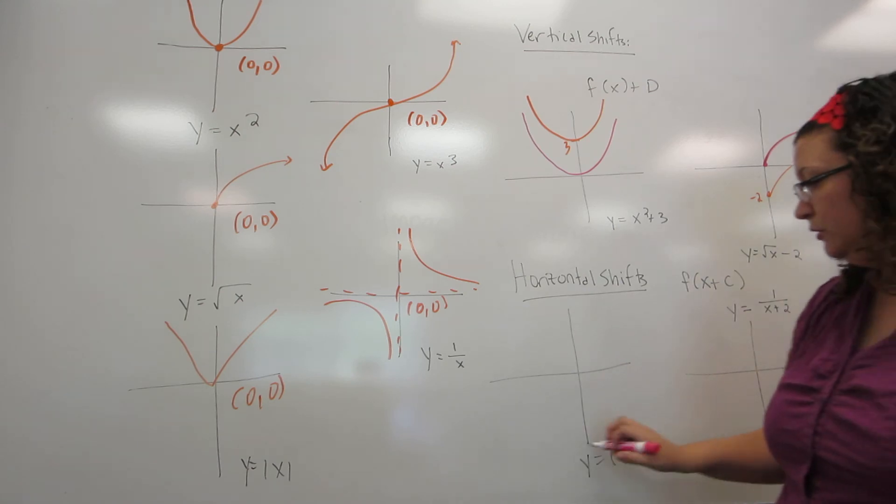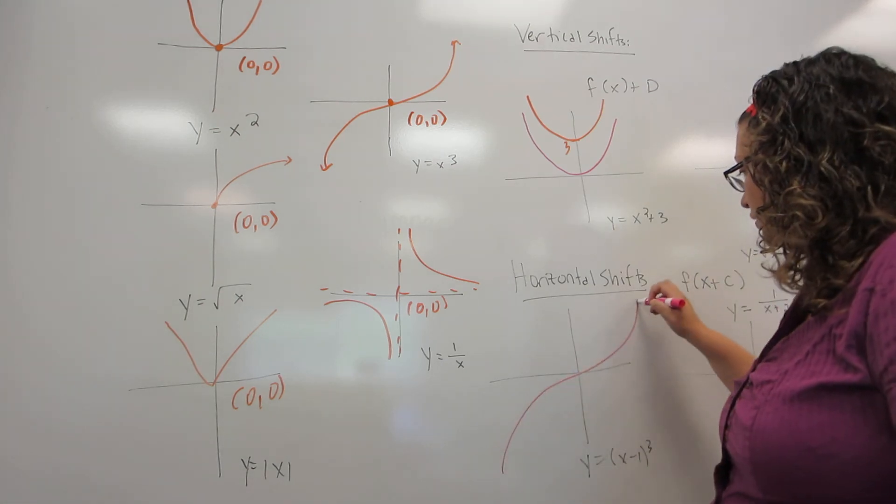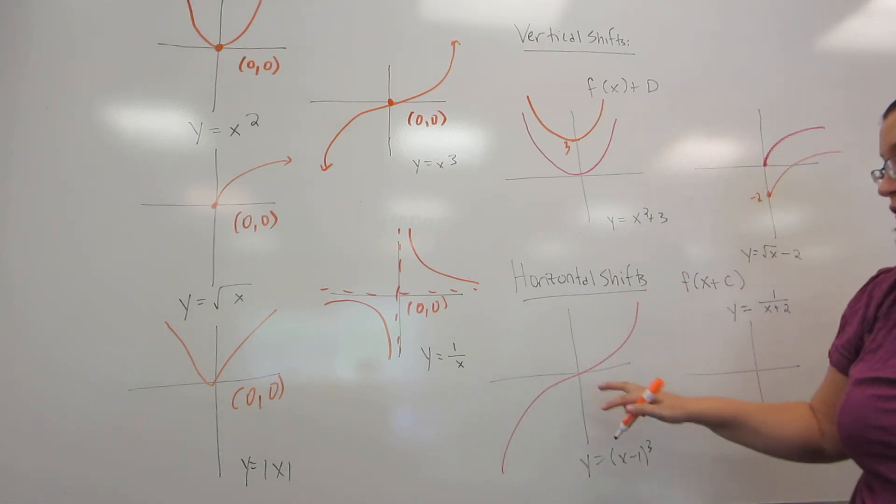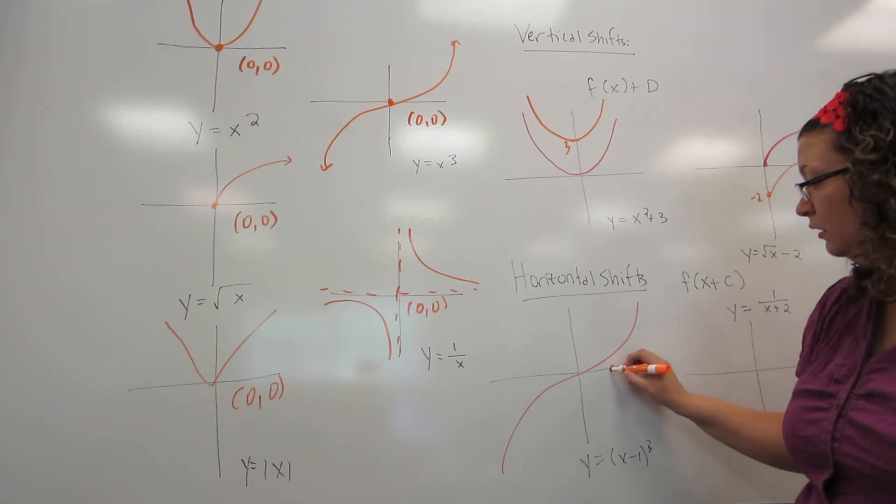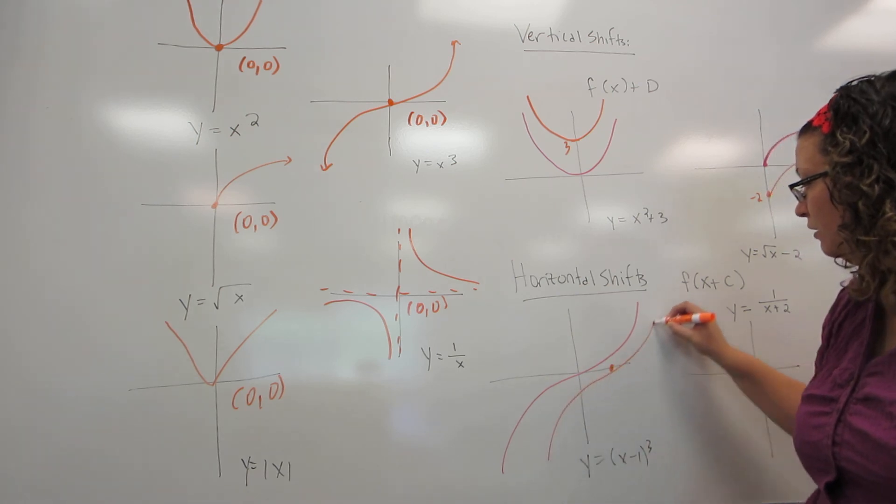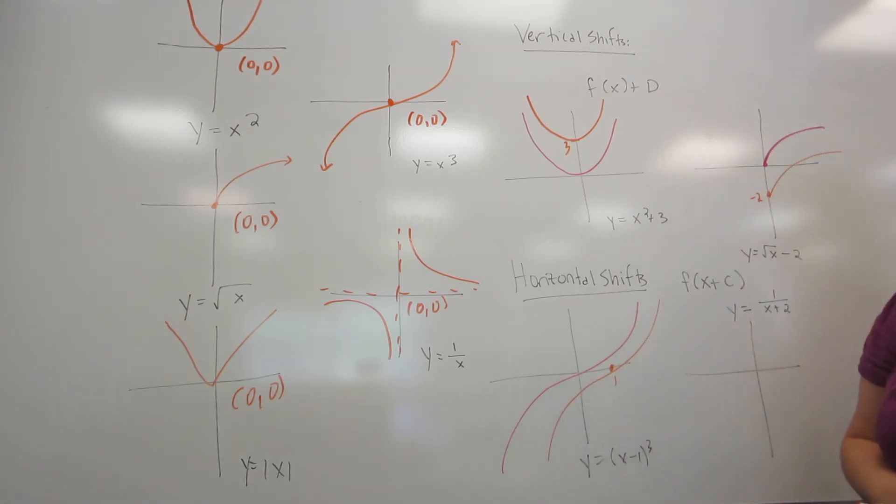So let's look at our examples. In this one, we're going to start with x cubed, whose most important point is the origin. I'm subtracting 1, which means I'm really moving it right. And my most important point is now at 1 on the x axis.